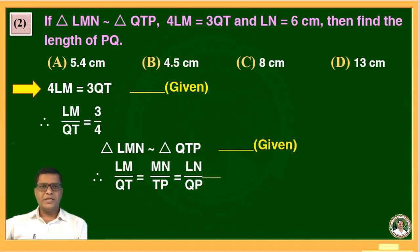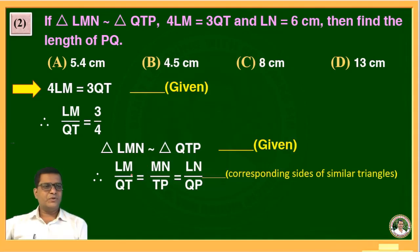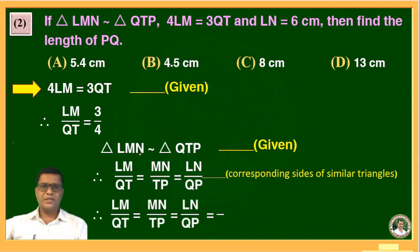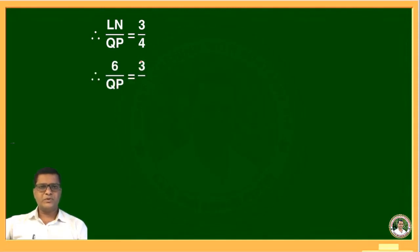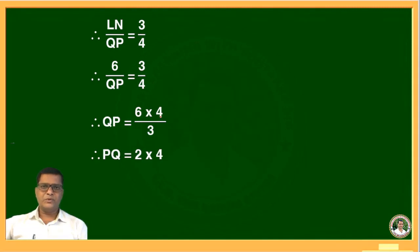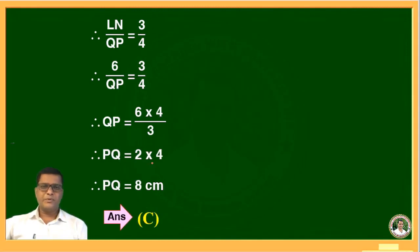The reason is: corresponding sides of a similar triangle. Since LM upon QT equals 3 by 4, all ratios equal 3 by 4. We want to find QP, so: LN upon QP is equal to 3 upon 4. Substituting LN equals 6: 6 upon QP equals 3 upon 4. By cross multiplication, QP equals 6 into 4 upon 3, which gives PQ equal to 8 cm. The answer is option C.